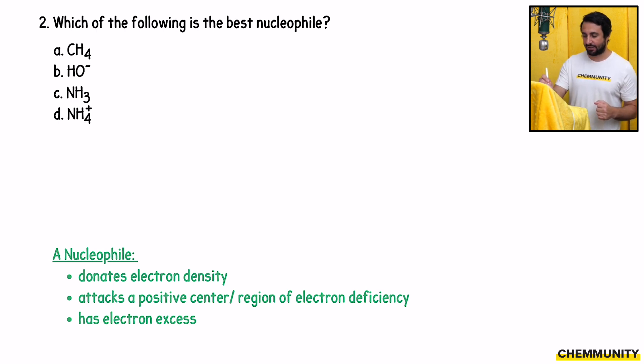Which of these has electron excess? Well, it's definitely not going to be methane. Carbon doesn't have a lone pair or anything like that. It's not going to be the ammonium ion because the nitrogen doesn't have a lone pair either. Ammonium will be similar to methane in that regard. There's nothing that can do any attacking.